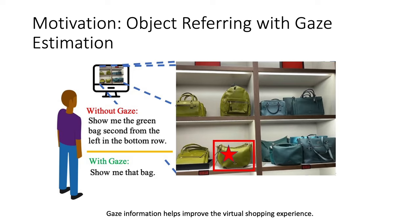Without gaze information, to correctly refer to the bag highlighted in the red box, the person needs to say a lot of complex descriptions, such as 'show me the green bag second from the left in the bottom row.' If the virtual assistant can detect the gaze information, the person only needs to say 'show me the bag.' The red star shows the predicted gaze position of the person.